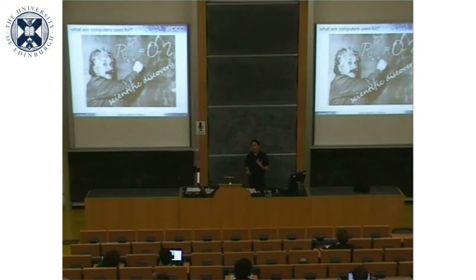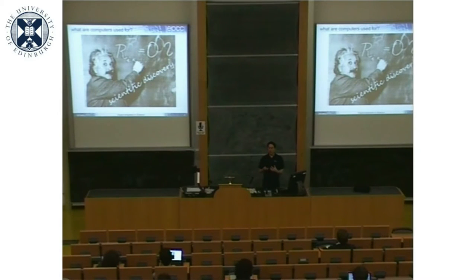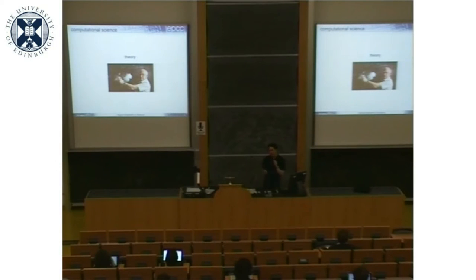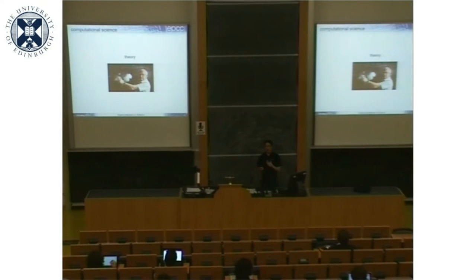This course is called computer simulation. What I'm going to cover is the kind of hardware and programming techniques people use to program very large supercomputers, but also touching on the algorithms and techniques people use to simulate real-life systems. The field I'm going to talk about is called computational science - that's not computer science. Computer science is the scientific investigation of computers and computing. Computational science is doing science - physics, chemistry, biology, engineering - using computers.